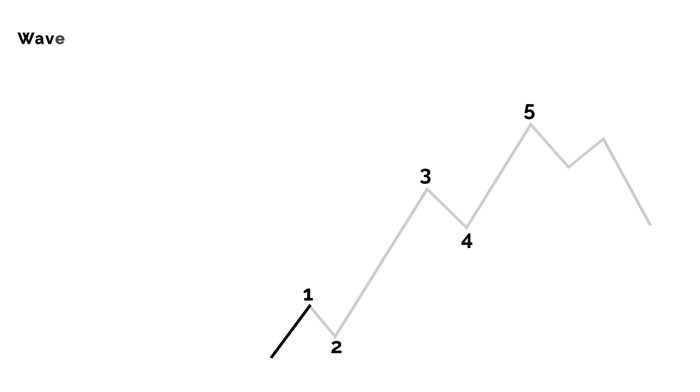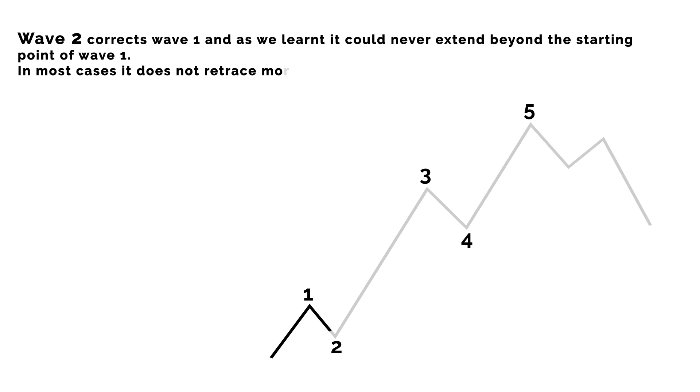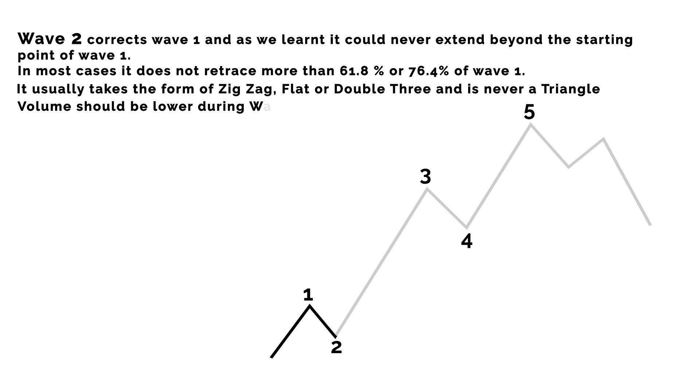Number 2, Wave 2. Wave 2 corrects Wave 1, and as we learned, it can never extend beyond the starting point of Wave 1. In most cases, it does not retrace more than 61.8% or 76.4% of Wave 1. It usually takes the form of zigzag, flat, or double 3, and is never a triangle. Volume should be lower during Wave 2 than Wave 1.